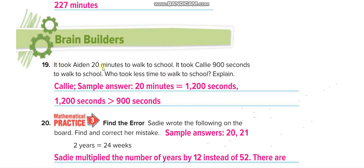It took 8 minutes and 20 seconds to walk to school, and it took Kelly 900 seconds. Who took less time? Converting 8 minutes 20 seconds: 8 times 60 equals 480, plus 20 equals 500 seconds. Wait — it was 20 minutes, so 20 times 60 equals 1200 seconds. Kelly took less time because Kelly only took 900 seconds.